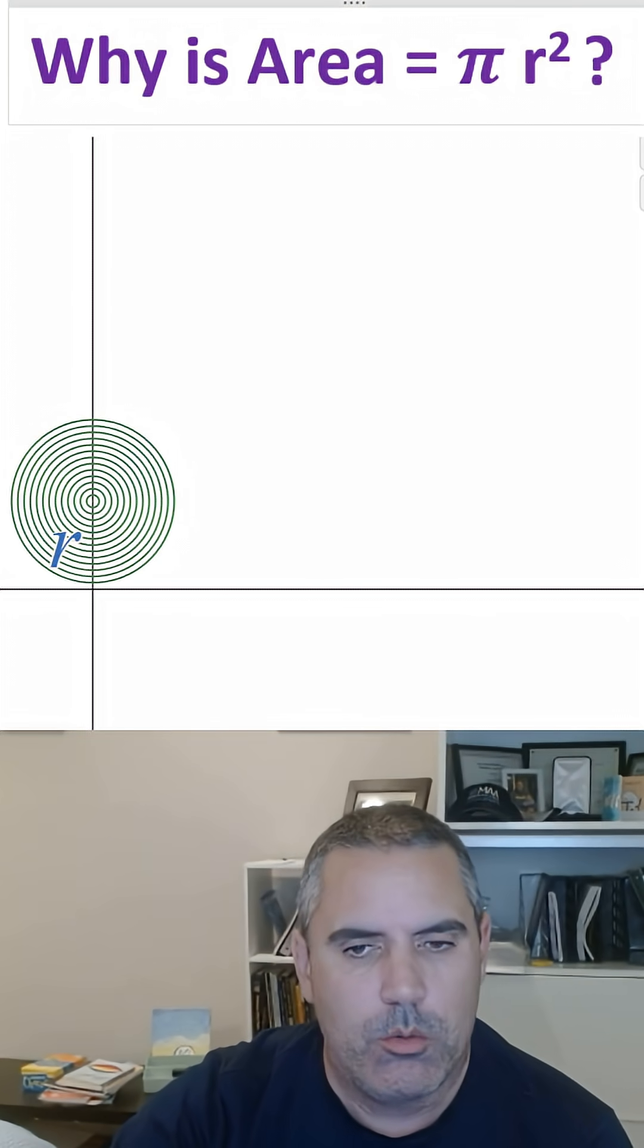Think about all the way around the circle. What do we call that? That's a circumference. That's 2 pi r.